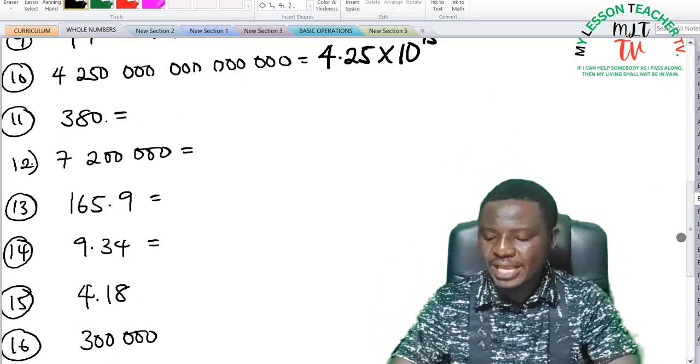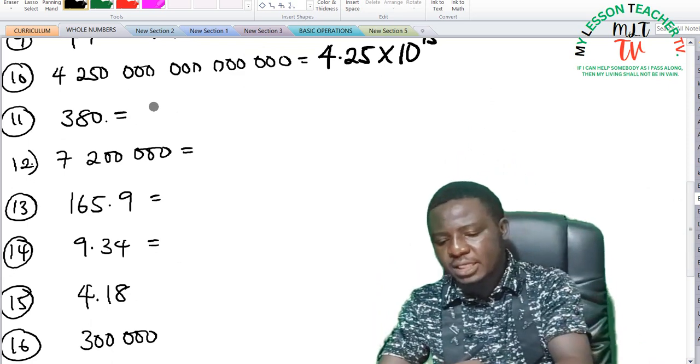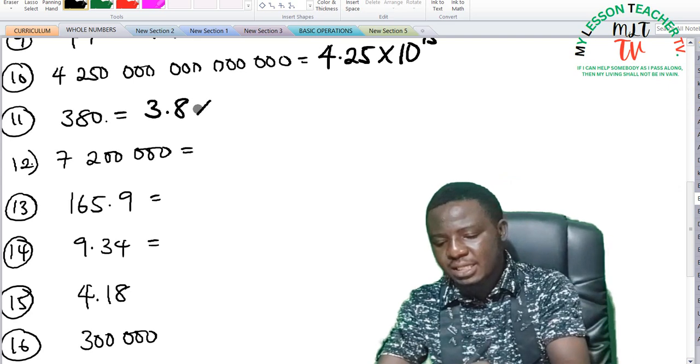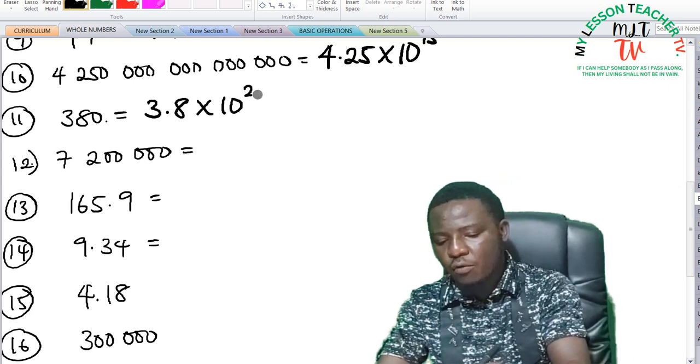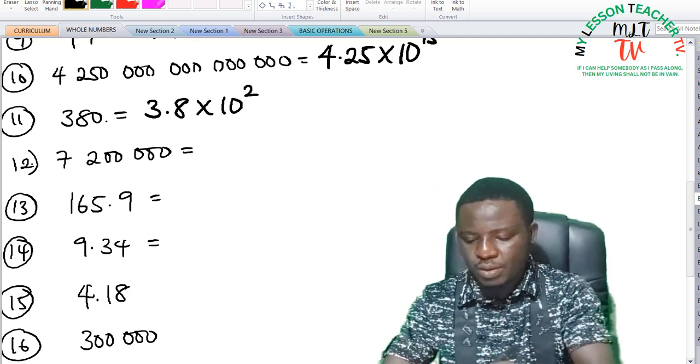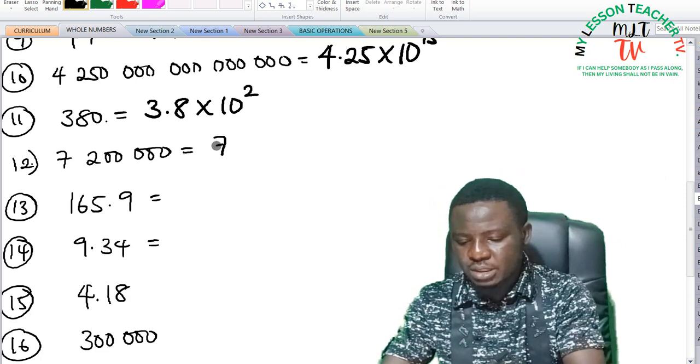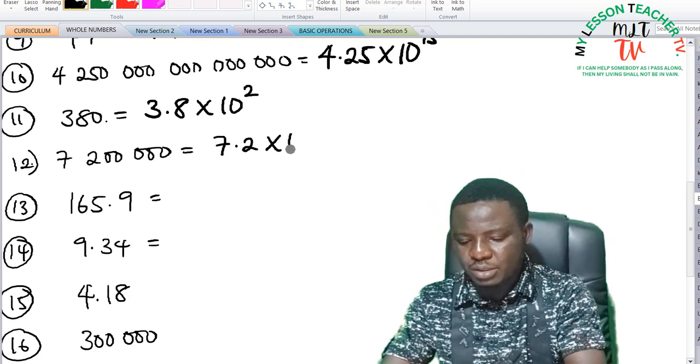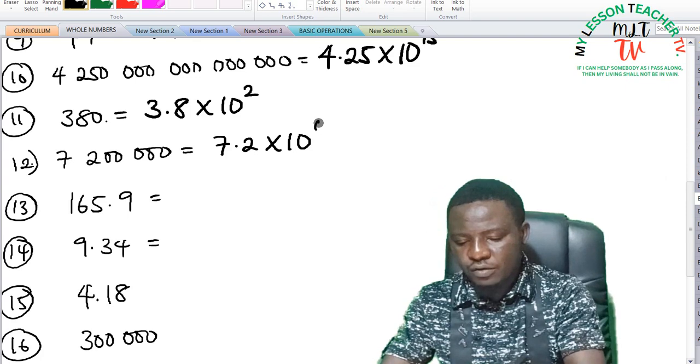Question 11, we have 380. 380 is 3.8 times 10 raised to the power of 2. And number 12, this can be said to be 7.2 times 10 raised to the power of 6.